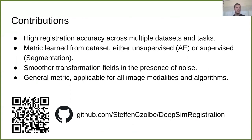So to summarize my talk, we introduced semantic similarity metrics for image registration. It achieved high registration accuracy across multiple datasets and tasks. We can learn this metric from the dataset, either through an unsupervised method using an autoencoder, or a supervised method using a segmentation model. And while the supervised method performs slightly better, even in the unsupervised setting, we gained increased performance. We also observed smoother transformation fields in the presence of noise. And finally, this is a general similarity metric for image registration, which is applicable to different image modalities and also different algorithms. We don't have to use this in a deep learning context. We can also use it for more algorithmic image registration.